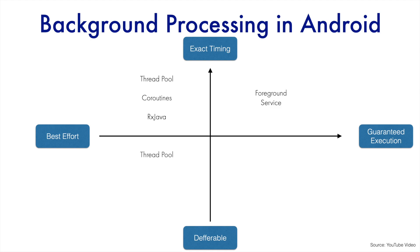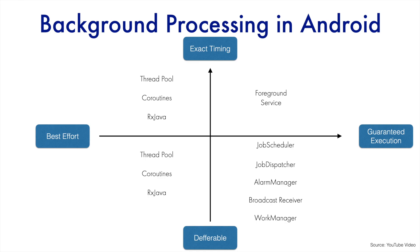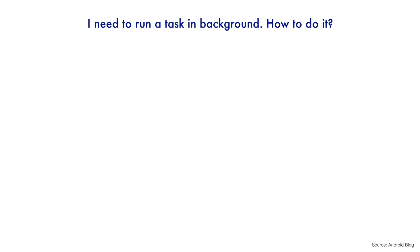In the third quadrant, thread pool, coroutines, and RxJava can again be used to get best-effort and deferrable behavior. Then in the fourth quadrant, job scheduler, job dispatcher, alarm manager, broadcast receiver, and work manager fall into the category where execution is guaranteed but not on a strict timeline. If you're still confused, this particular decision tree can really help you.